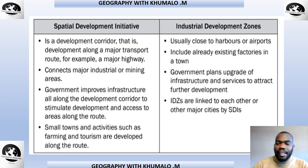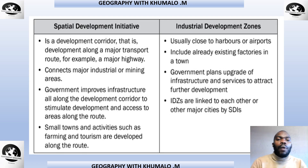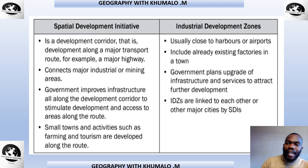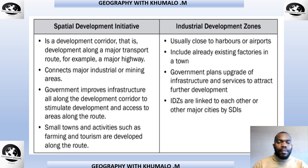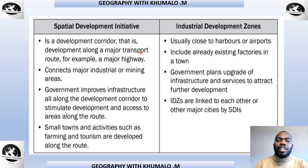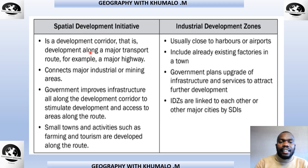Today I want you to know the difference between Special Development Initiative, known as the SDI, and the Industrial Development Zones, known as the IDZ — a continuation from lesson nine. A Special Development Initiative is a development corridor — it is development along a major transport route, for example a major highway. It connects major industrial and mining areas, linking IDZs to one another.